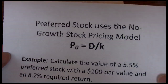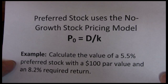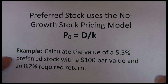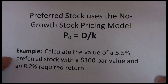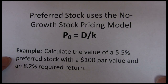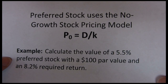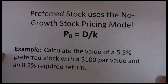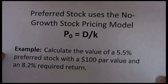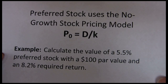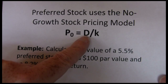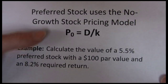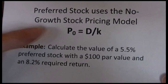When we get into our preferred stock pricing models, we're going to use the no growth pricing model, because dividends do not increase or decrease — they're a fixed percentage of par — and we're assuming that our preferred stock has an infinite maturity, so there's no ending point. Basically it boils down to a perpetuity: you receive that fixed dividend every year divided by the required return, and that gives you the value of the stock.